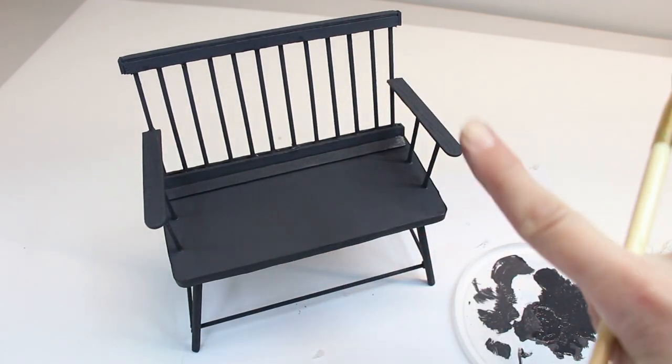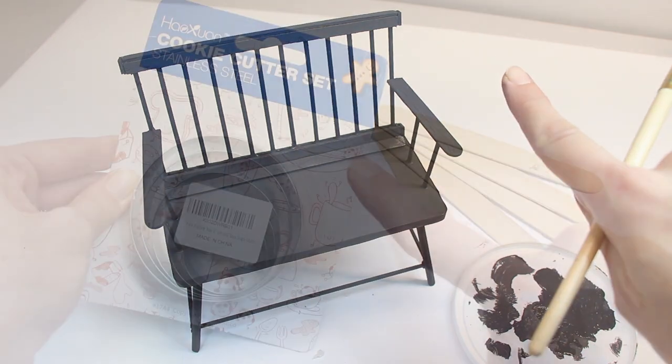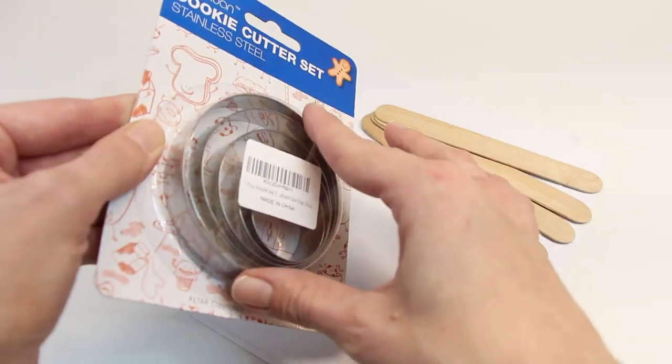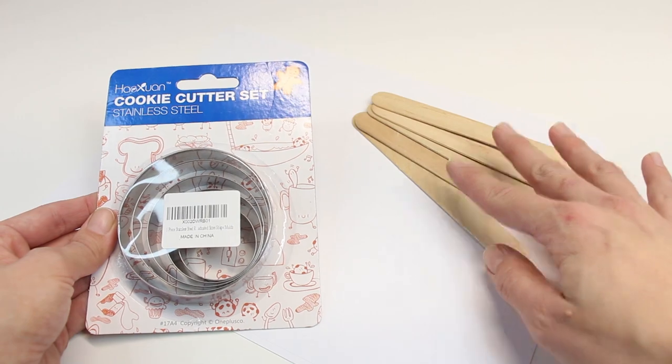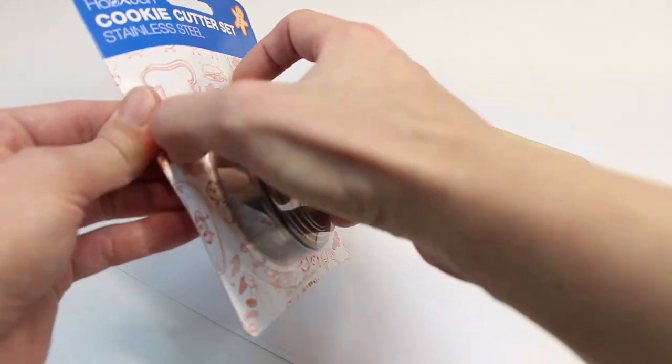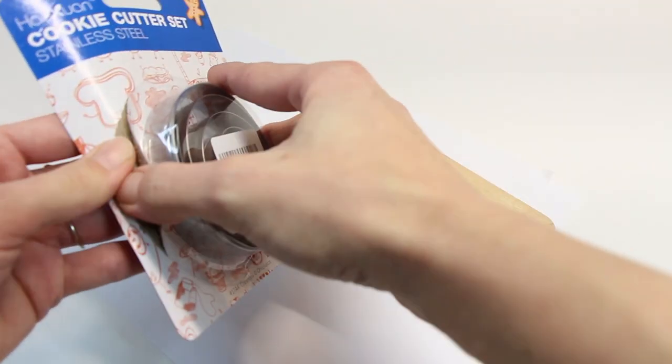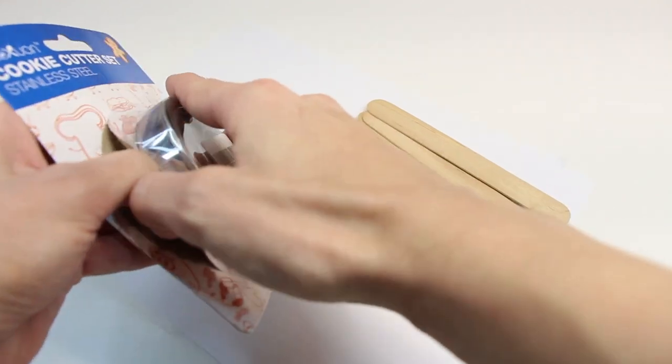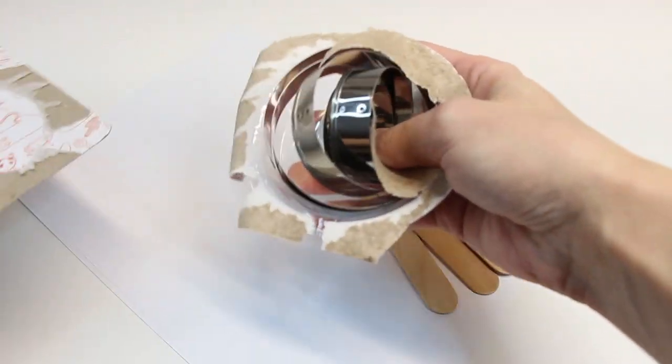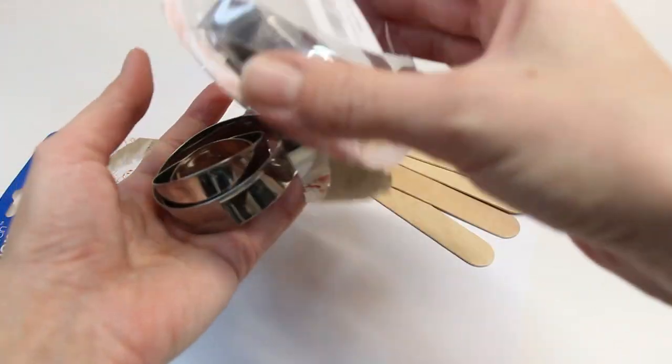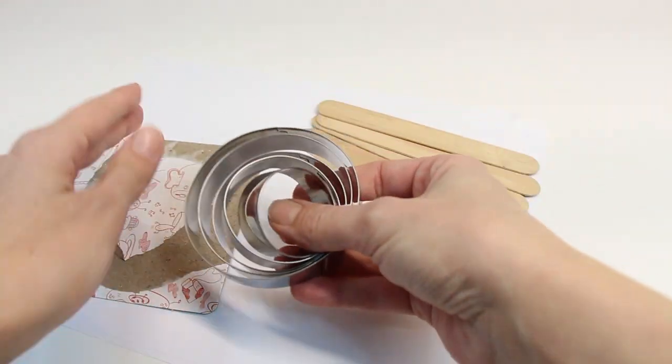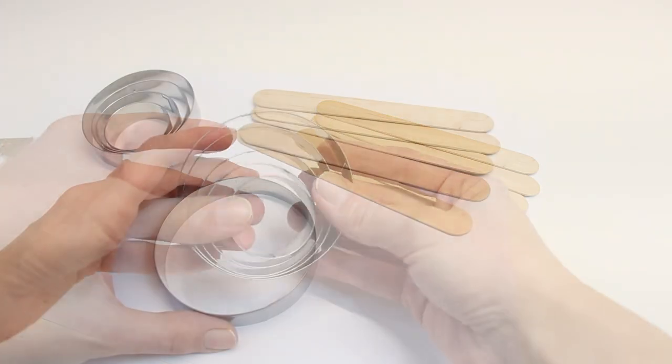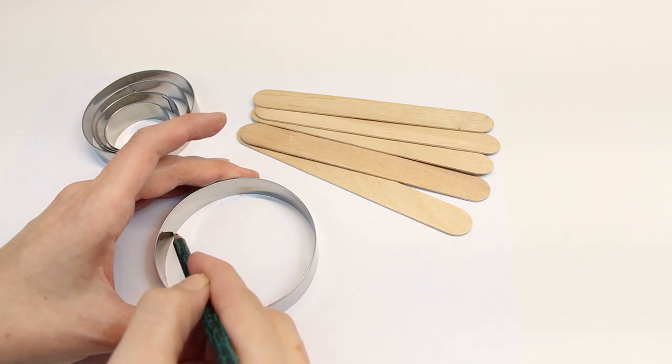All right, are you ready to see what you can do with some round cookie cutters and a couple of craft sticks? I really like those round metal wall shelves that I see on Pinterest and I thought how fun would it be to make them for the dollhouse? I bought this set of cookie cutters on Amazon. I'll add the link in the description box below. I'm going to add two shelves to the large cookie cutter.